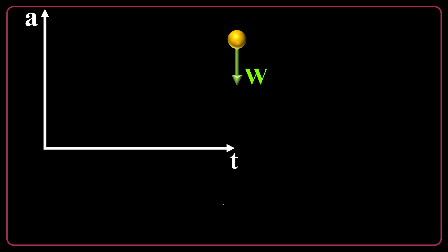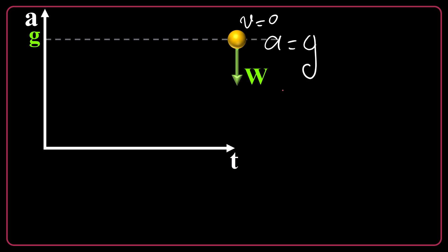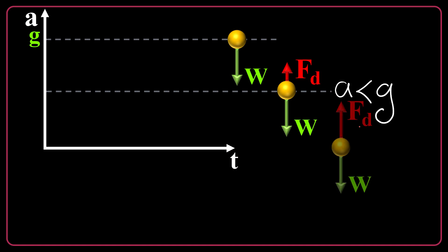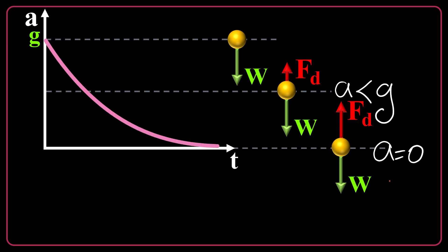Let's consider the acceleration-time graph in freefall. At the beginning, when you release the object from rest, there is no drag force, so acceleration is g. As the object speeds up, the drag force opposes W and the acceleration becomes something less than g — not zero, but less than g. When the object reaches terminal speed, there is no acceleration, so acceleration starts at g and tends to zero.